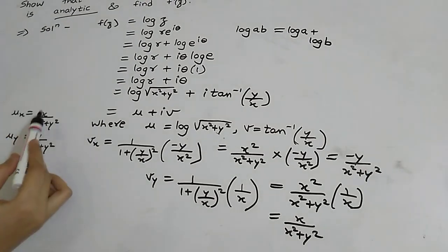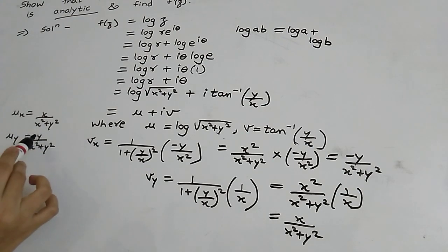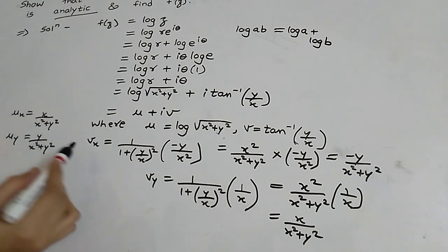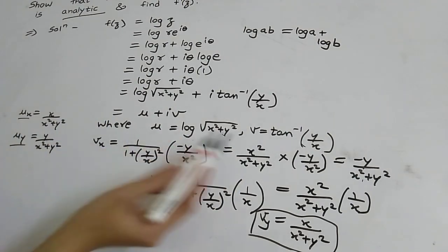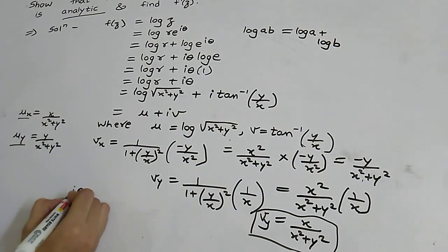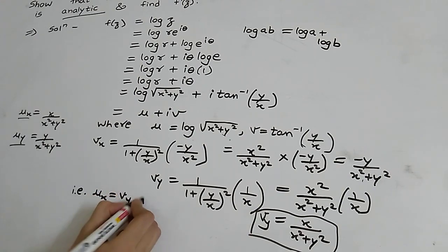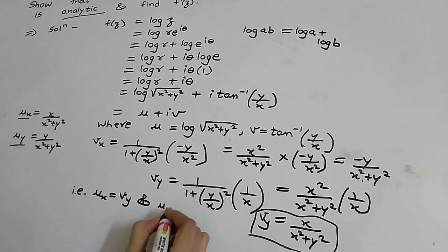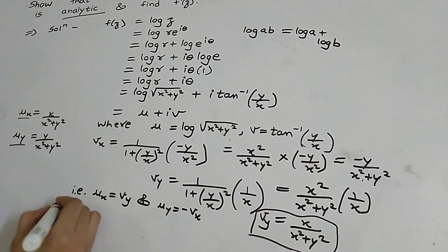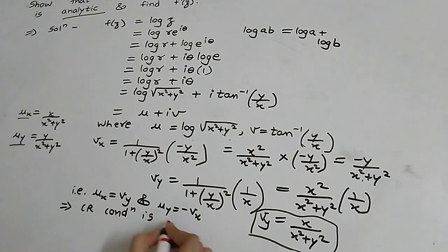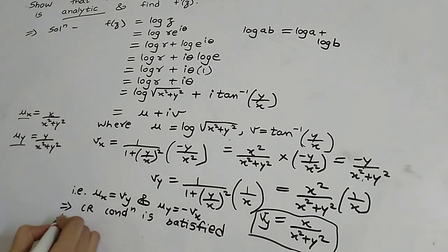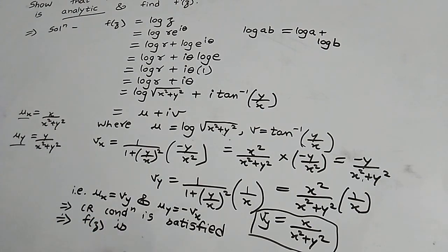So we can see that u_x = v_y (both equal x/(x²+y²)) and u_y = -v_x (both equal y/(x²+y²)). Therefore the CR conditions are satisfied, which implies f(z) = log(z) is analytic.